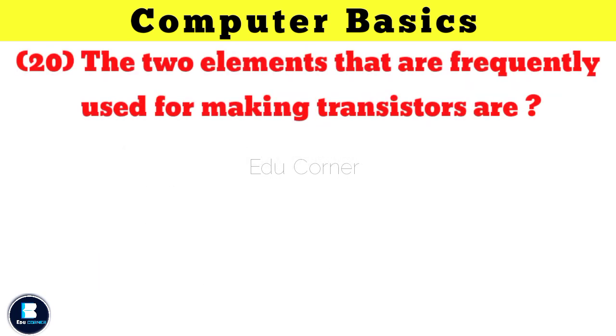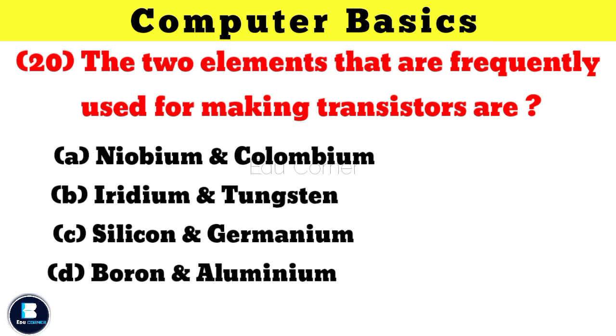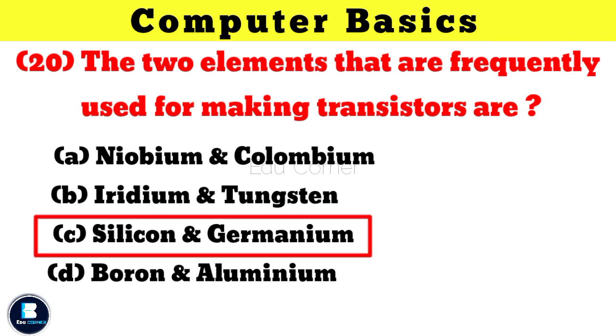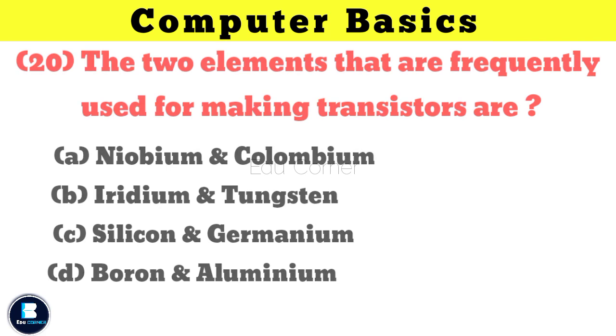The two elements that are frequently used for making transistors are silicon and germanium.